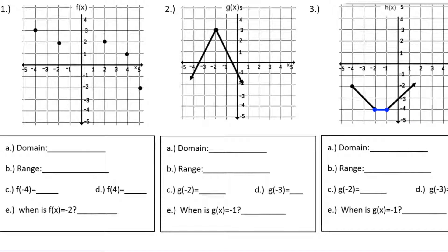This is a walkthrough for the review for transformations and functions for Algebra 2. Let's get right into problem number 1. Your first set of problems, 1 through 3, are asking you about the domain and the range, and some basic information like what is f of negative 4 and f of 4. Let's go through them one by one.